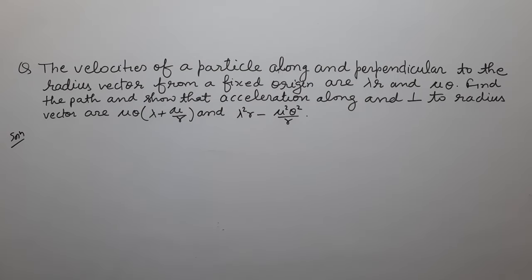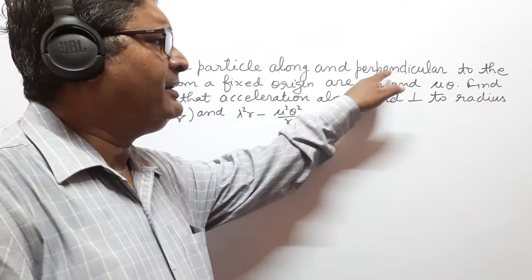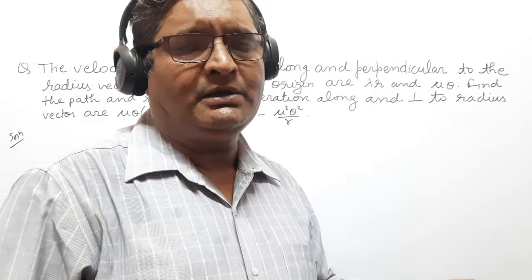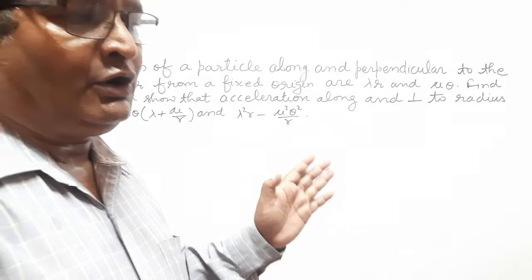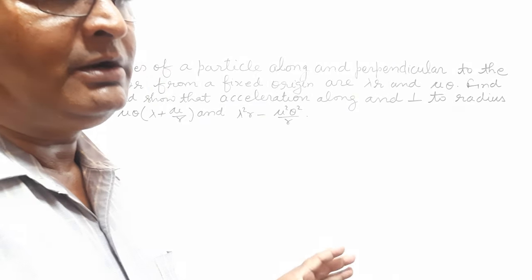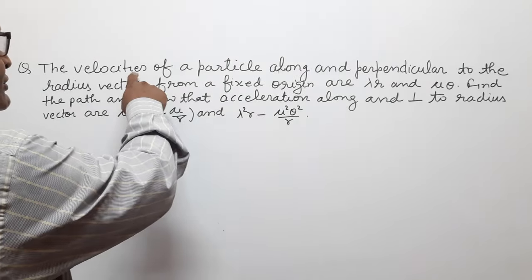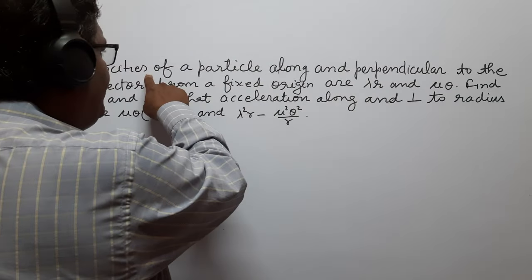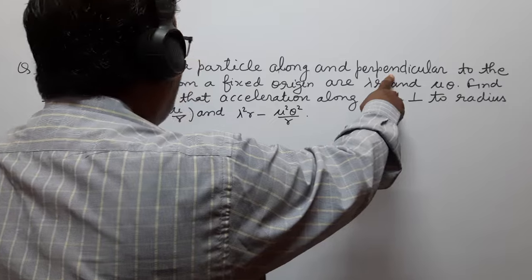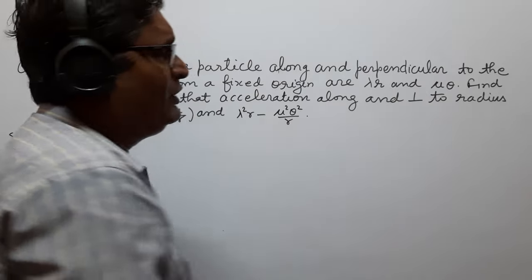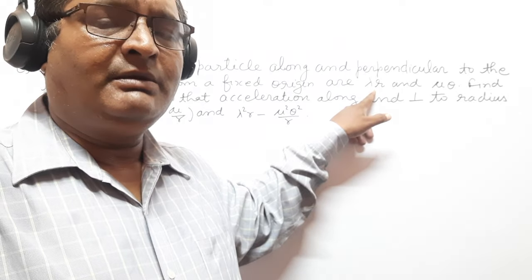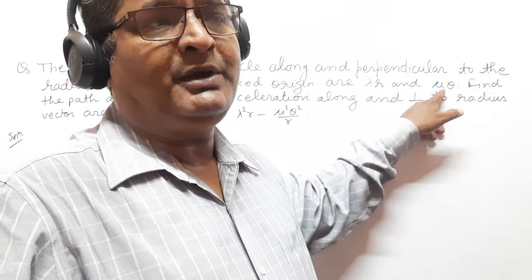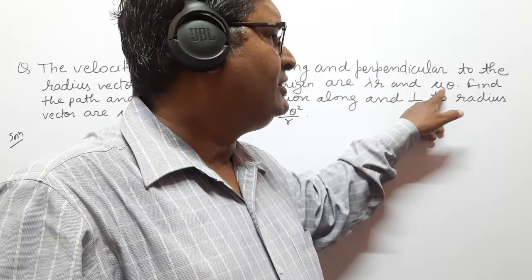The velocities of a particle along and perpendicular to the radius vector are given. The velocity component along the radius vector is called radial velocity, and the velocity component perpendicular to the radius vector is called transverse velocity. So λr is the radial velocity and μθ is the transverse velocity.